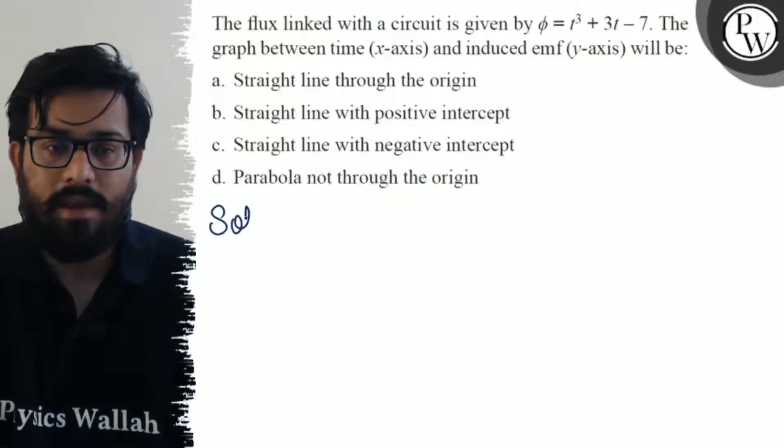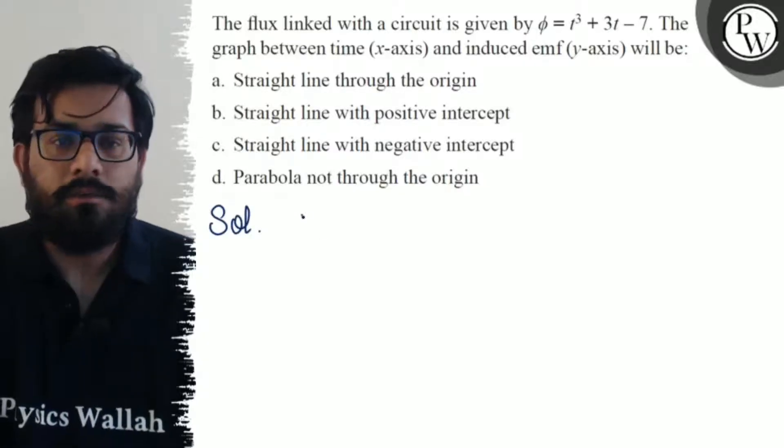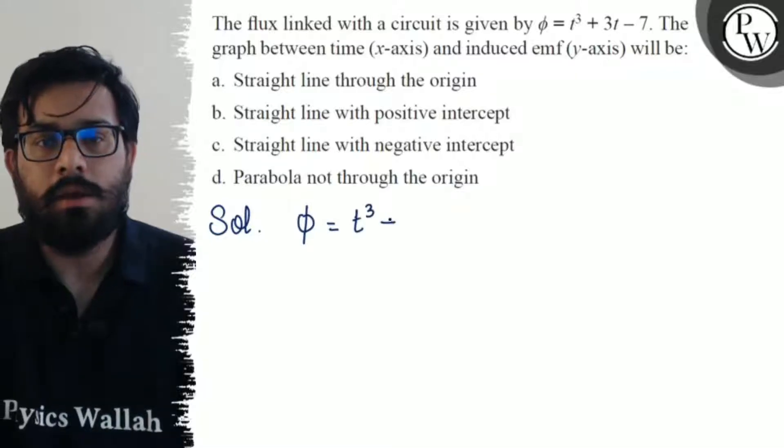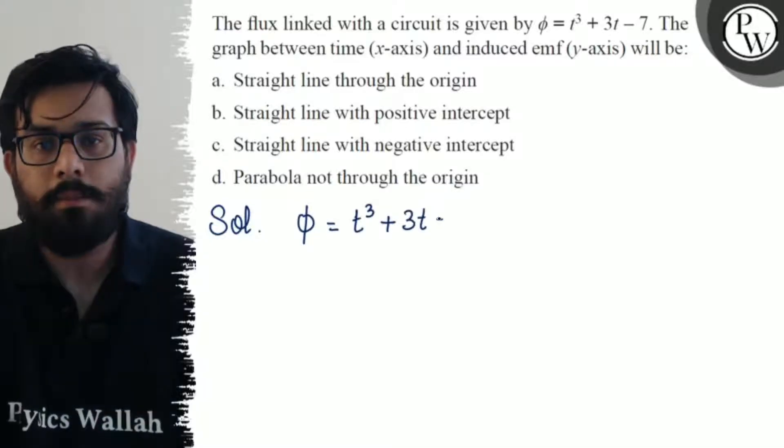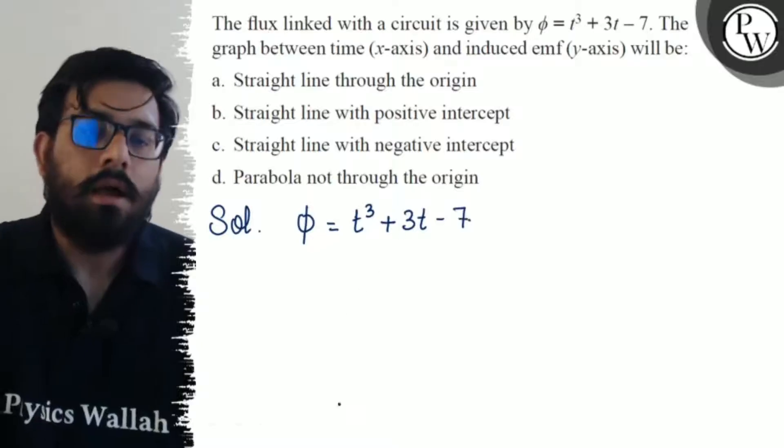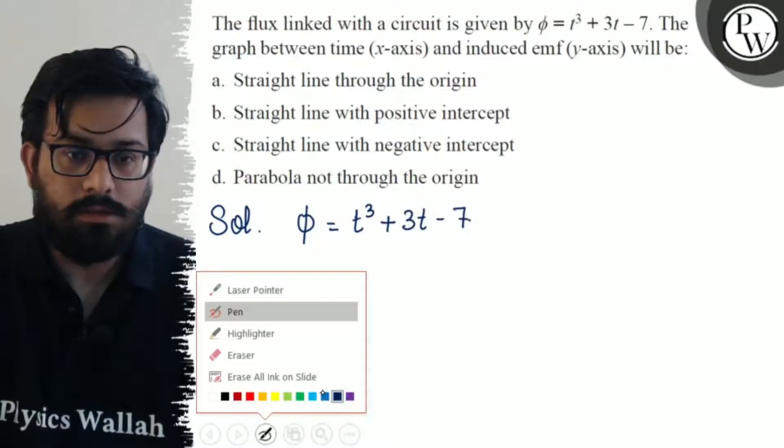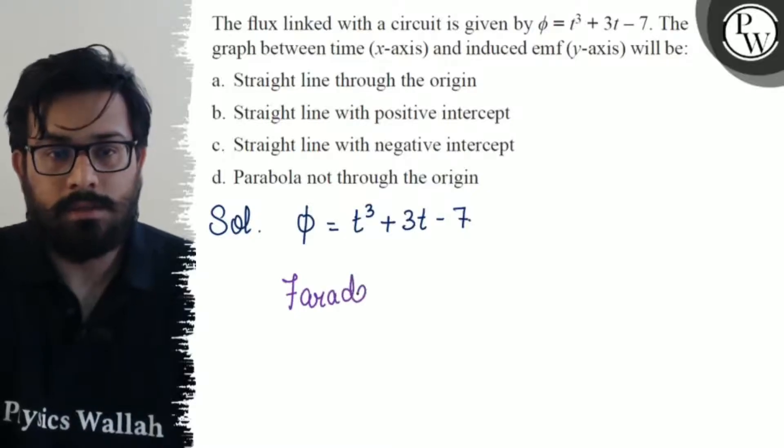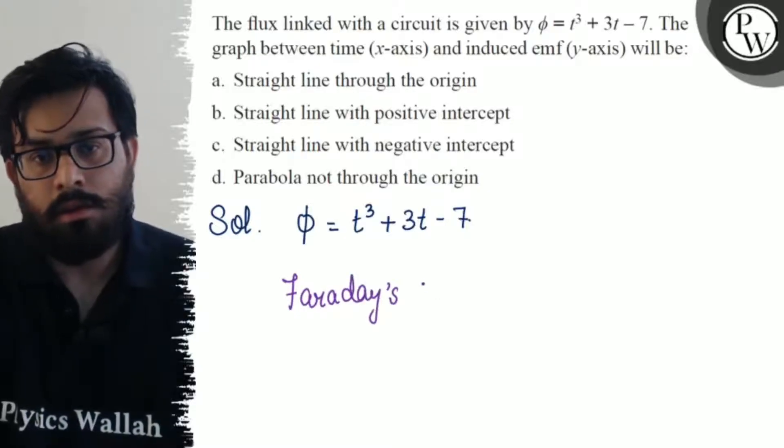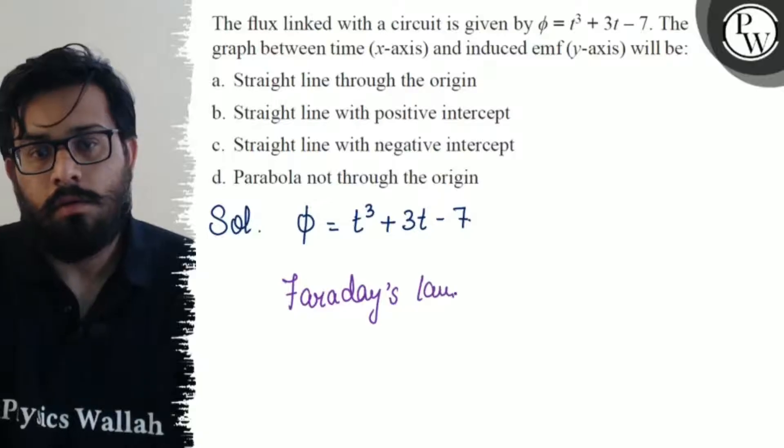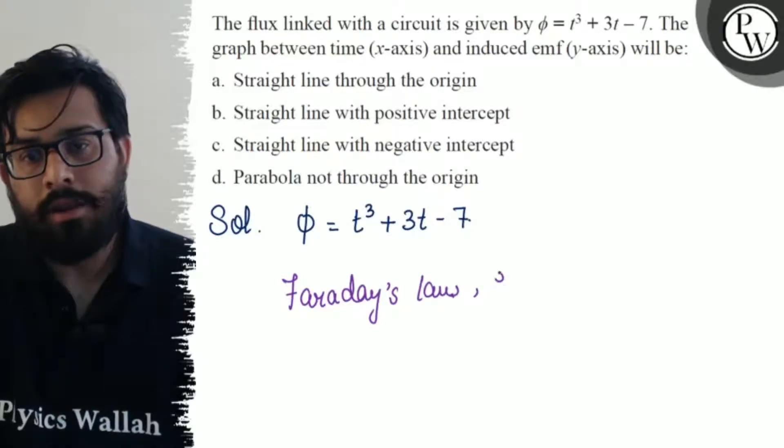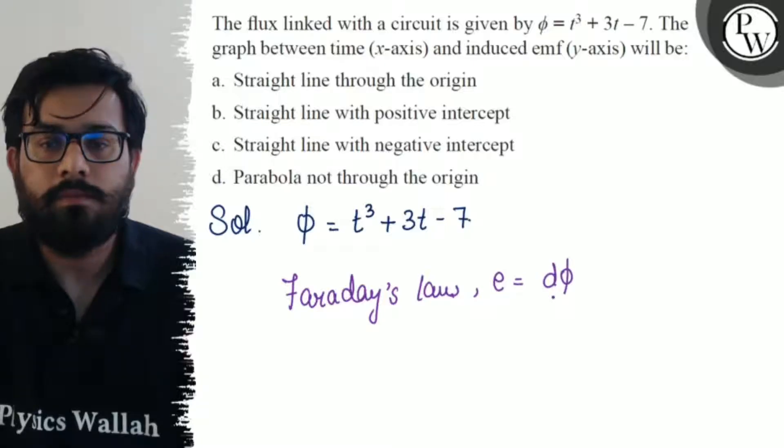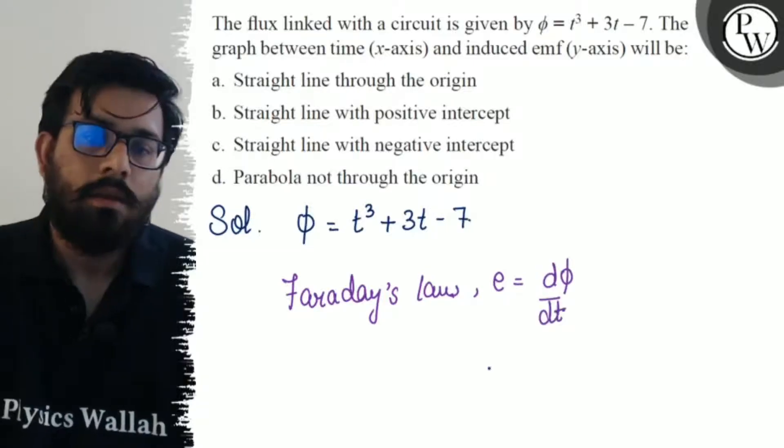So what are the given datas? We have the phi is given to us as t³ + 3t - 7. Now, from Faraday's law, we know the concept that induced EMF is equals to dφ/dt, right?